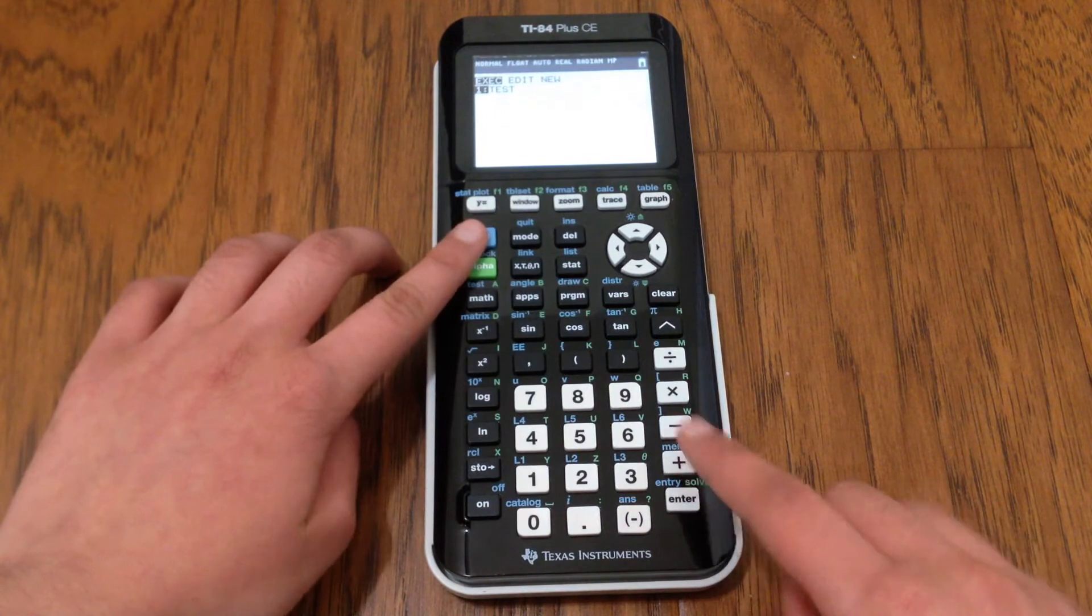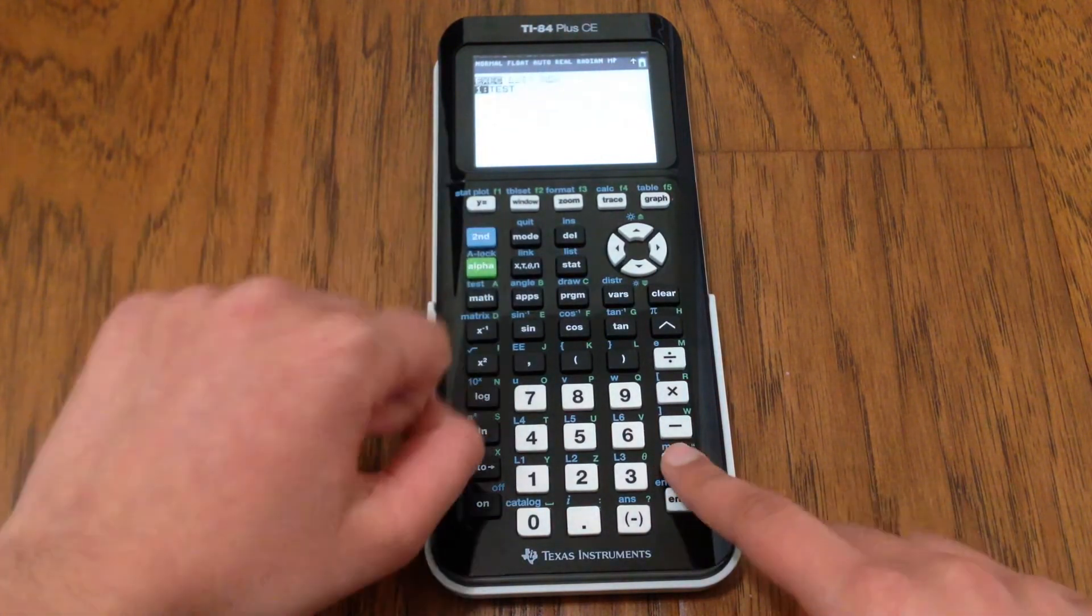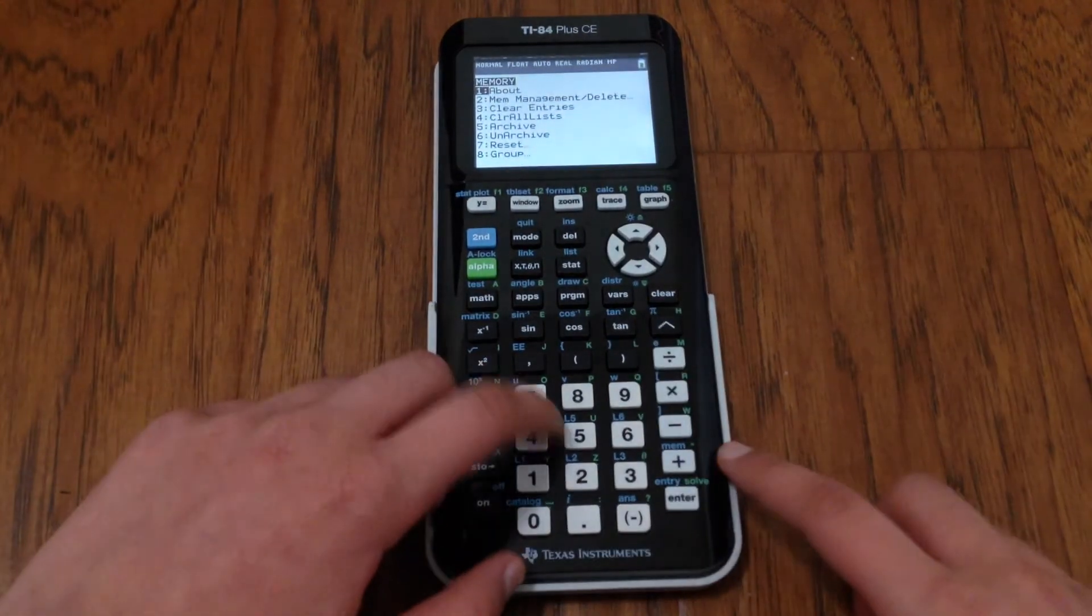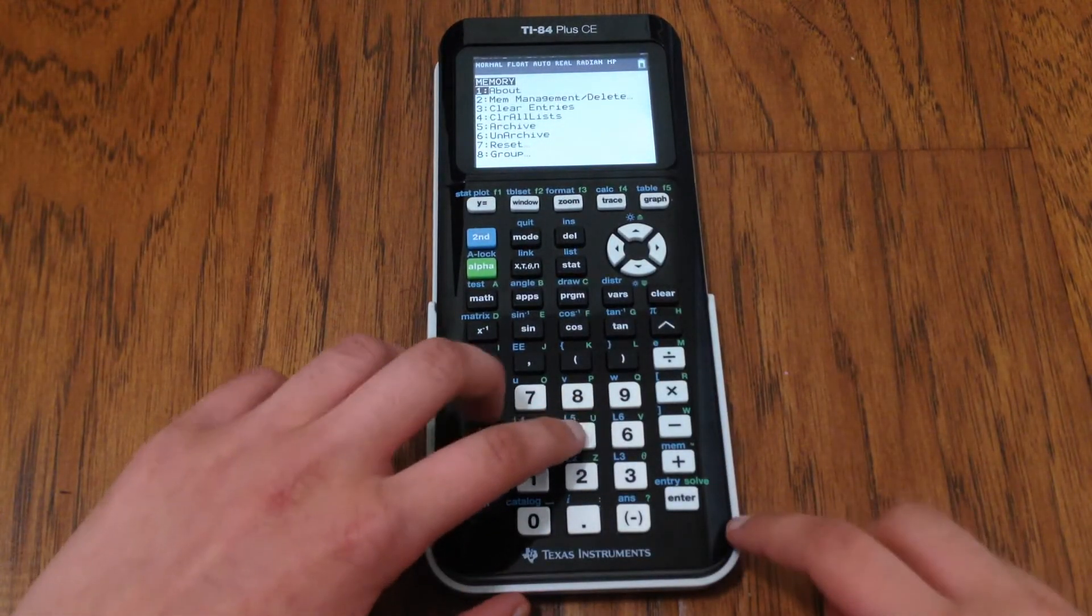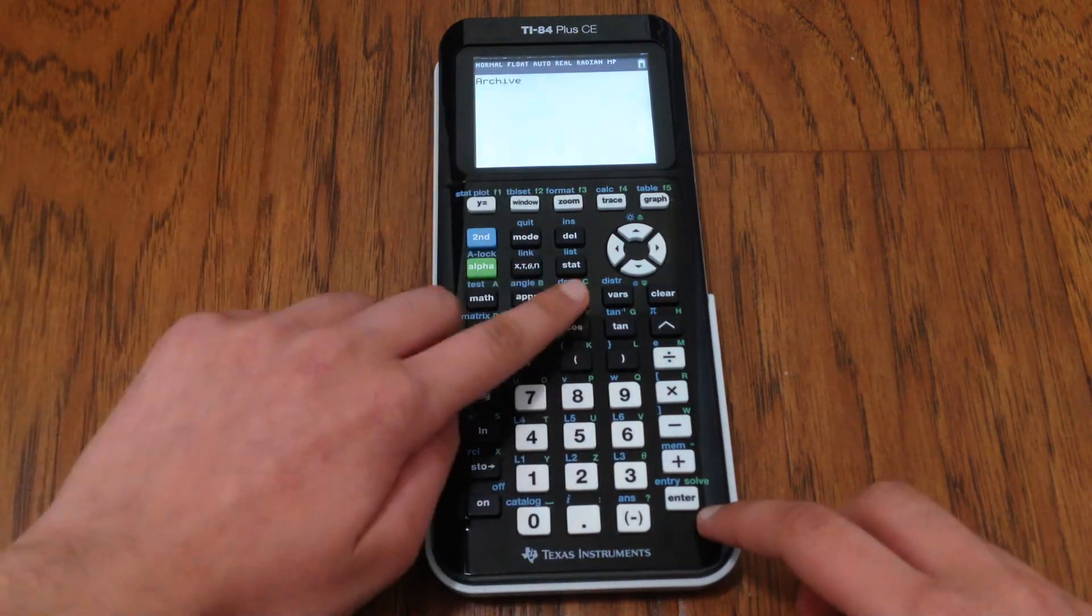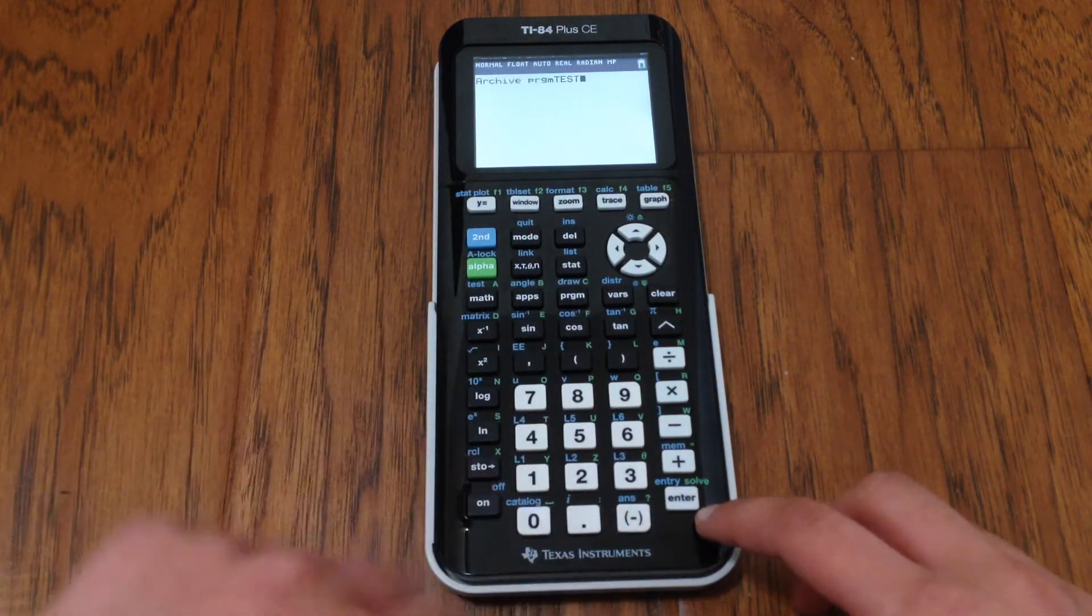The way we can do that is by hitting second plus to go to memory. It has this memory menu. What we want to do is hit archive - that's the five button. It'll say archive program and we select our program.